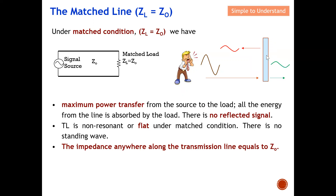Some sound will be able to penetrate through the wall and result as the outcome on the other side. So the total sound wave produced by the boy splits into two portions: one reflected back, another absorbed and transmitted through. Under maximum power transfer from source to load, all the energy from the line is absorbed by the load — whatever signal generated by the source must be absorbed by the load, with no reflected signal.